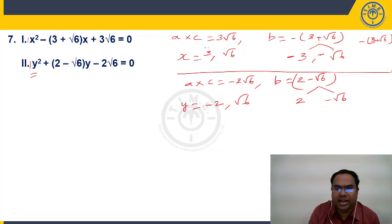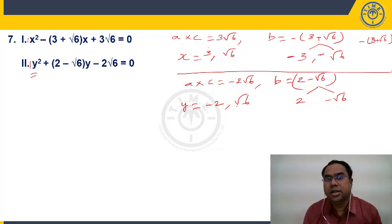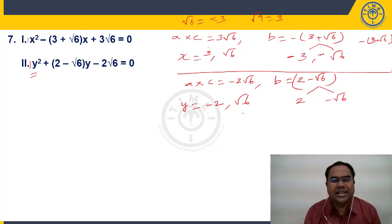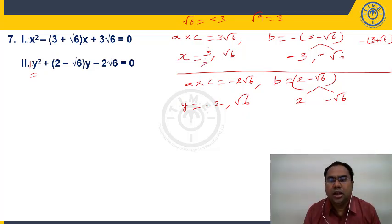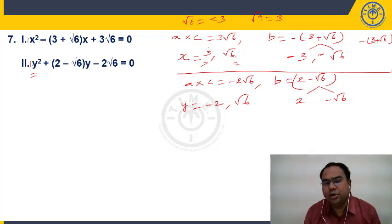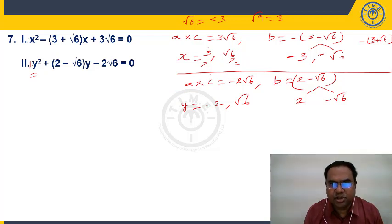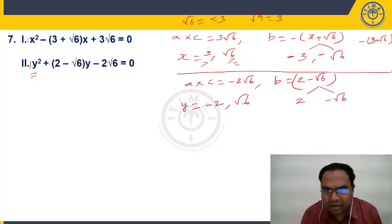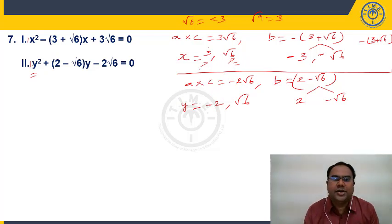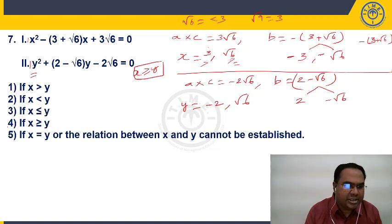Comparing: X=3 is greater than Y=−2 and greater than √6 (since √9=3, so √6 < 3). X=√6 equals Y=√6. But for Y=−2, X root √6 is positive and therefore greater. So X ≥ Y — X is greater than or equal to Y. This is present in the fourth option.